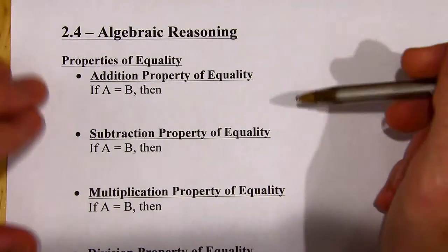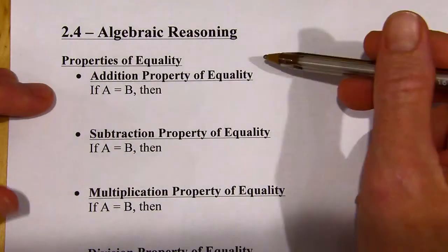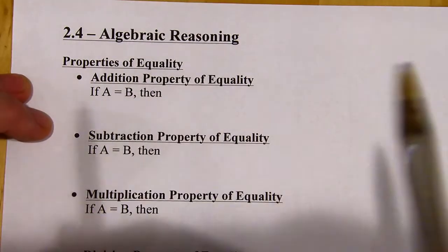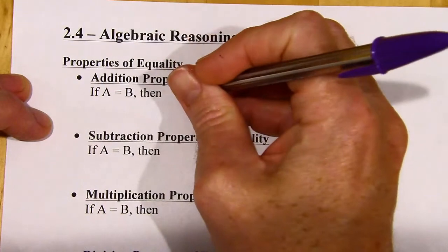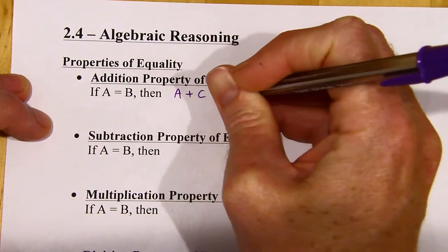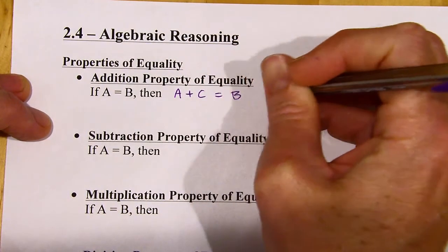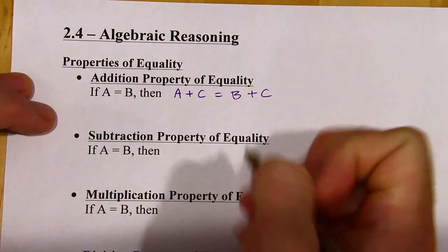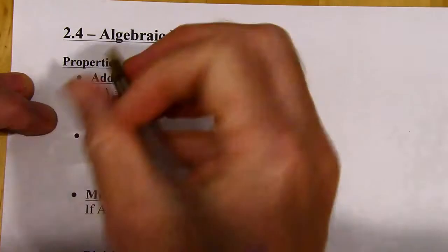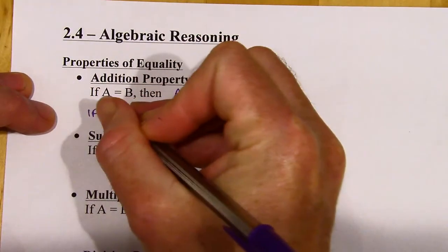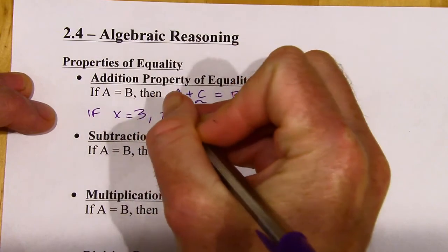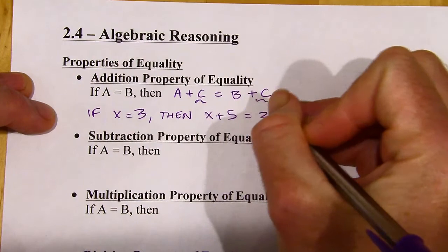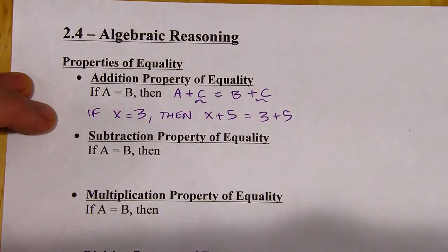First up, we've got all of these properties of equality. The first one is the addition property of equality. I've got a very simple equation here: A equals B. The idea is that you can add the same thing to both sides of an equation and you'll still get a true equation. If A equals B, then A plus C is going to equal B plus C. So if X equals 3, then X plus 5 is going to equal 3 plus 5. I can add 5 to both sides of the equation and it will still be true.